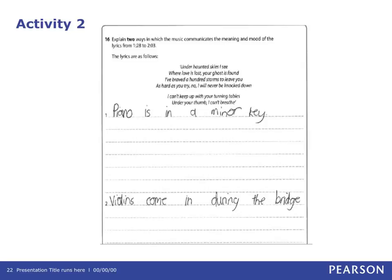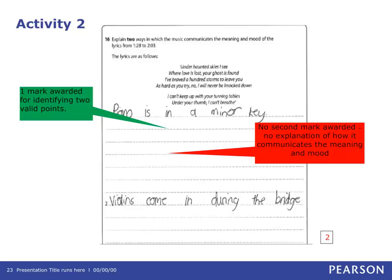Activity 2 refers to Question 16 from Section B. The question reads: 'Explain two ways in which the music communicates the meaning and mood of the lyrics from 1 minute 28 to 2 minutes and 3 seconds.' In this example, the learner has gained a total of two marks. One mark has been credited for each valid point, but no second mark has been awarded, as the learner has not provided an explanation of how the music communicates the meaning and mood.